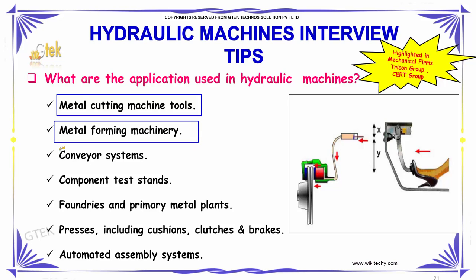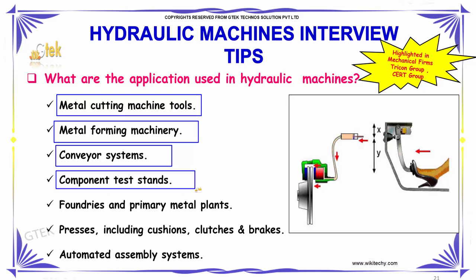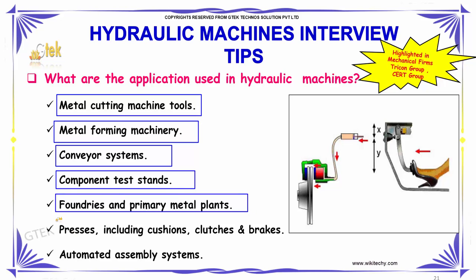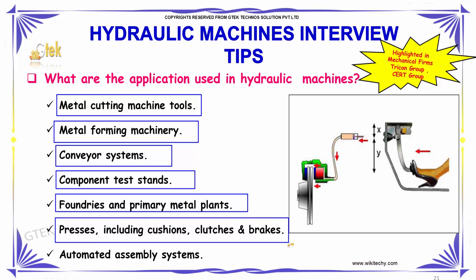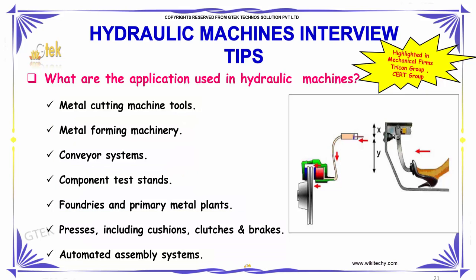metal forming machinery, conveyor systems, component test strands, foundries and primary metal plants, presses including cushions, clutches and brakes, and automated assembly systems. These are the applications used in hydraulic machines.